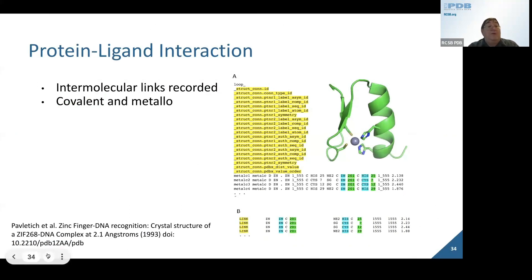We have a way of showing intermolecular links using the struct_conn category. This is a zinc finger. I'm showing the metallo links between the zinc and the two histidines and two cysteines. This is equivalent to the legacy PDB file format—you're getting the same information, just in a different place. The PDB format limits the precision you could provide, so you could see a distance of 2.14 angstrom. In the PDBx-mmCIF file, we have 2.138, since we do not have the limitations on space.